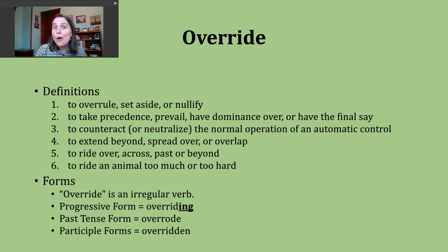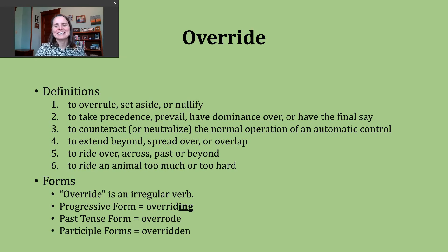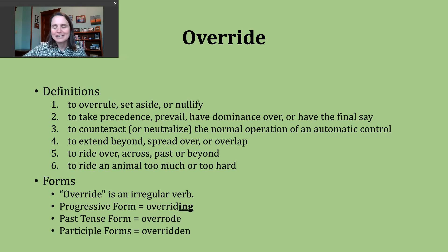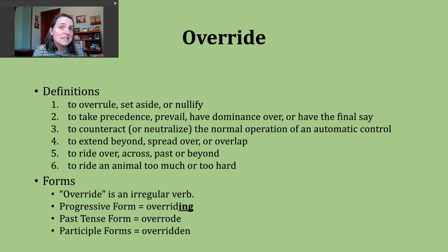A second way the verb override gets used can mean to take precedence, prevail, have dominance over, or have the final say. With this definition, it might help to think of two situations. The first: think of a parent and teenager. Sometimes the teenager makes a certain decision, but the parent says no, you're not going to do that. The parent has the final say. They override whatever the teenager is expressing as a wish or desire.